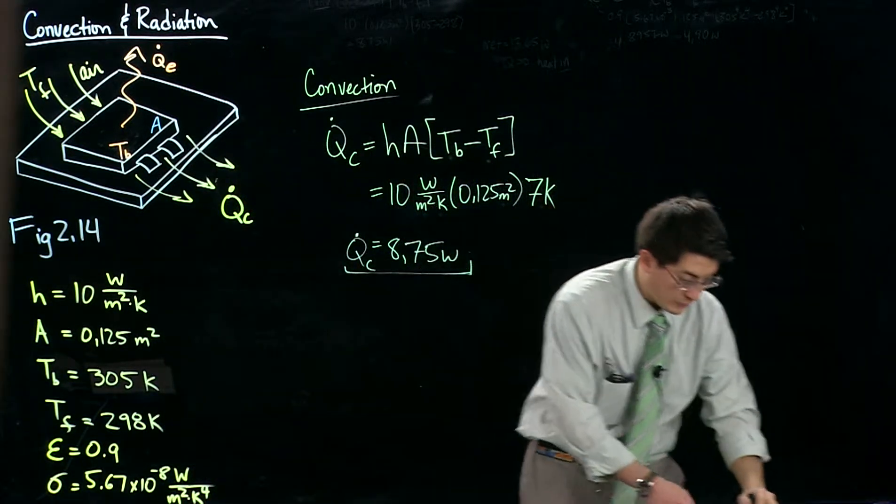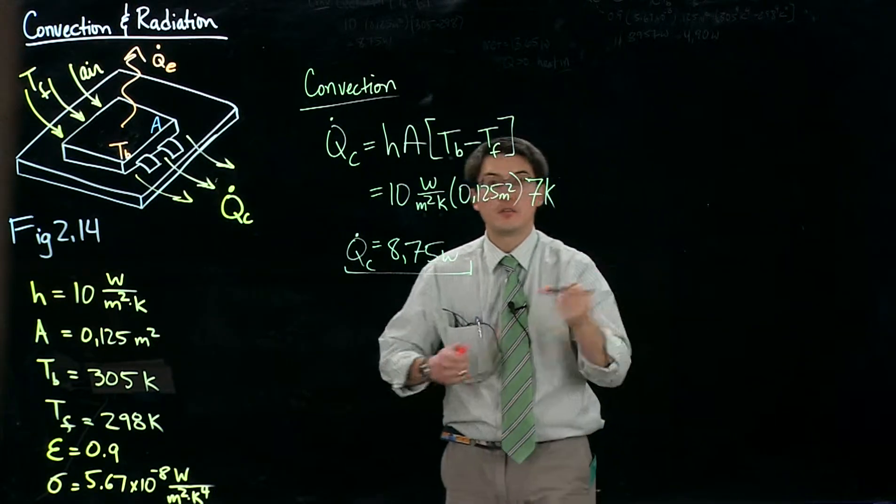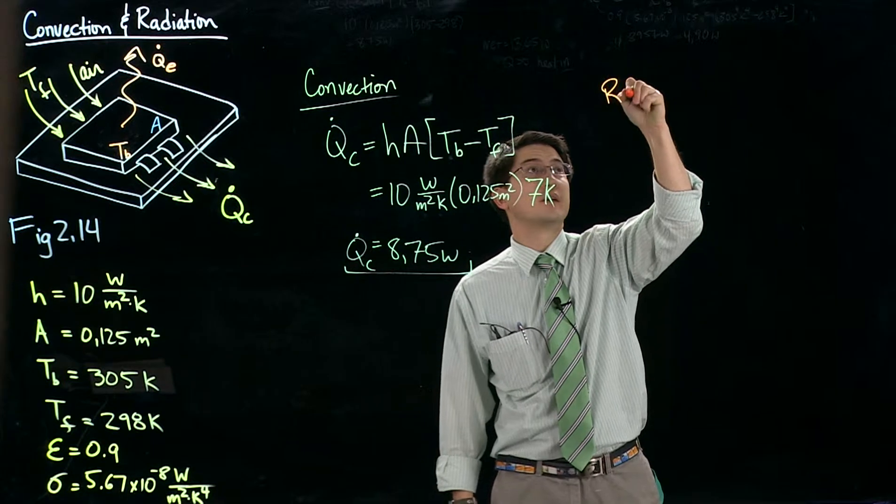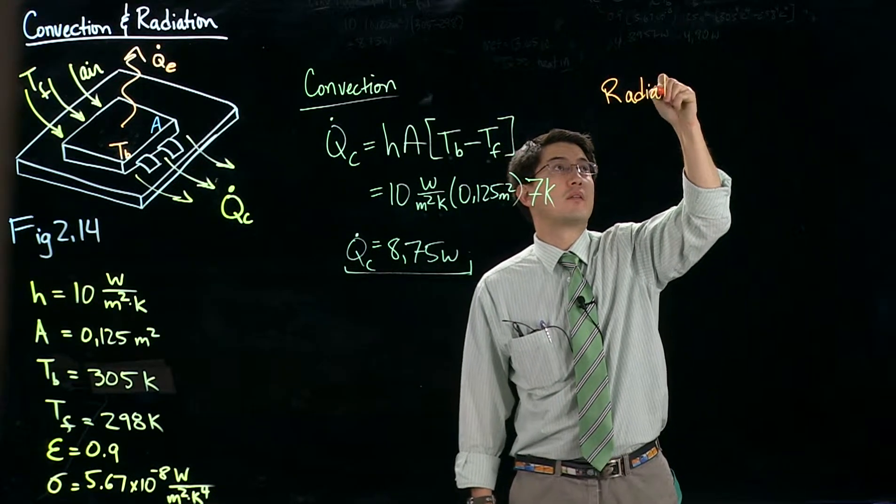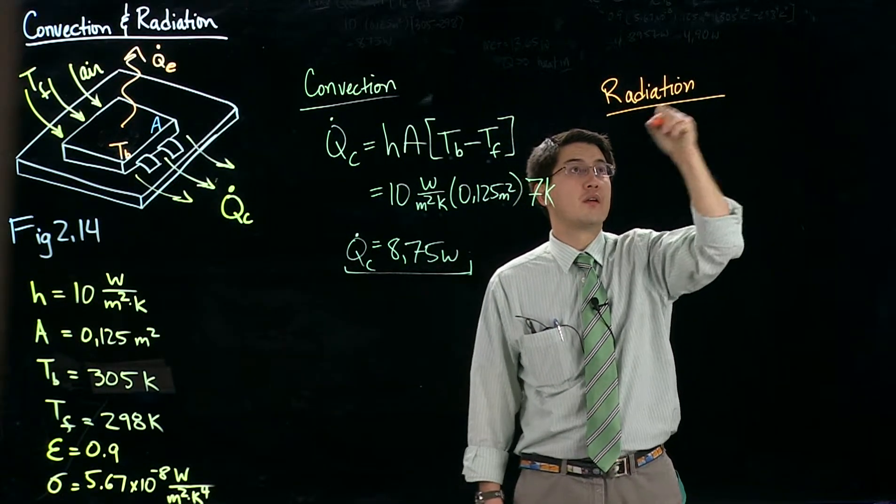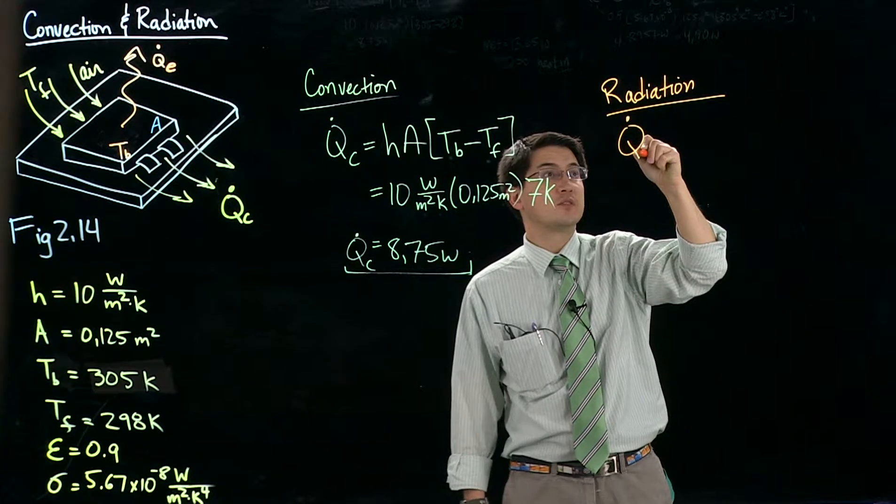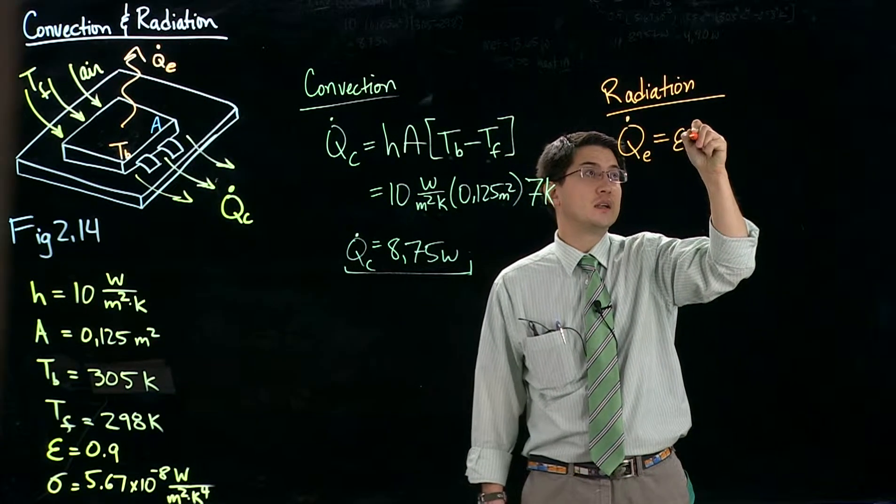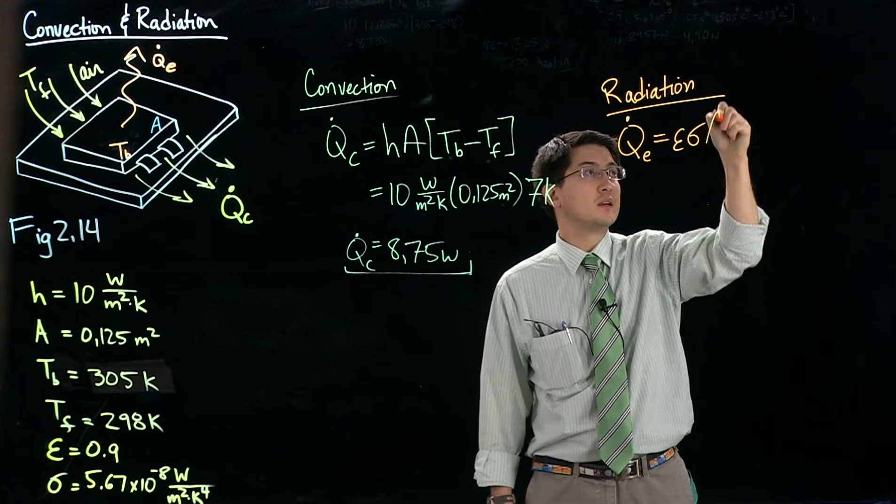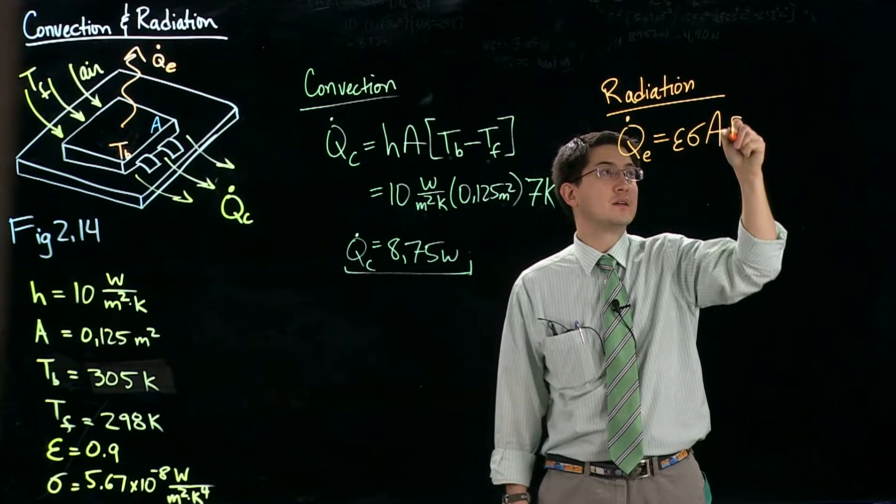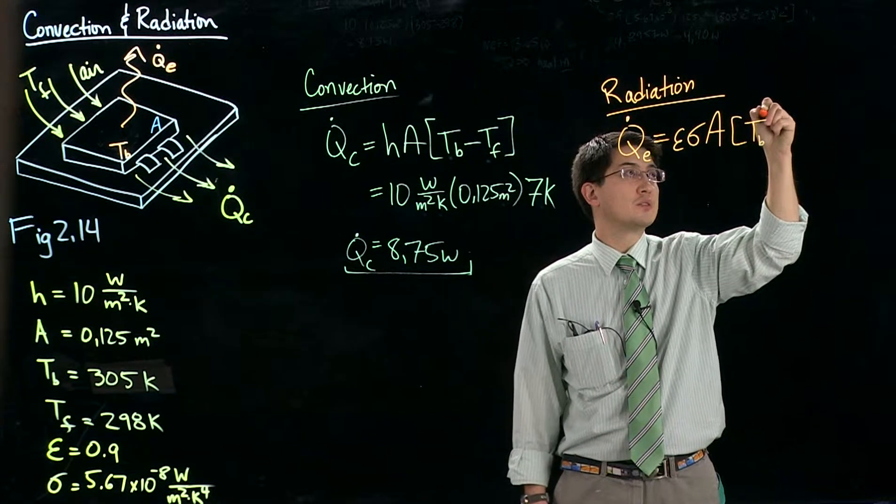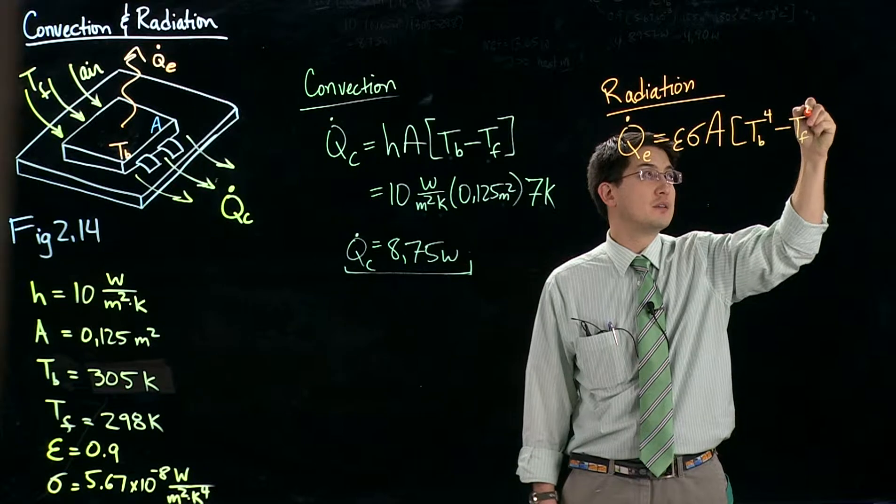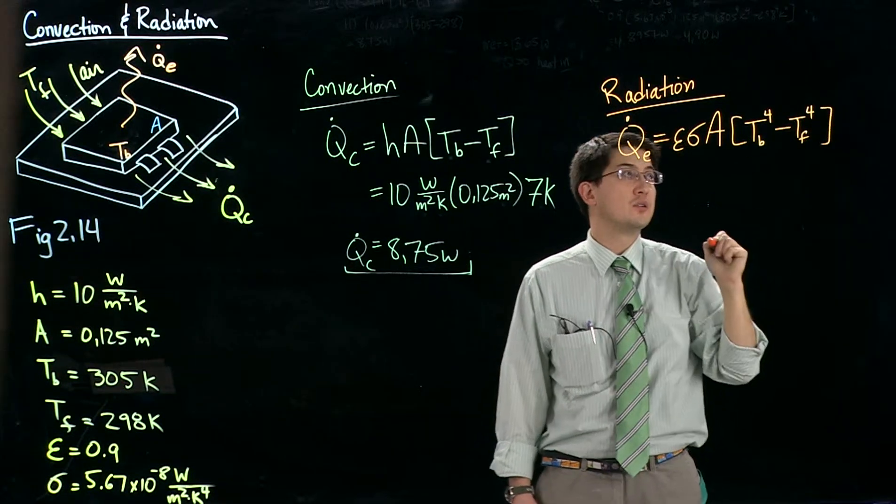So that's the first step. For the second step, let's find the radiation. The heat transfer rate for radiation is going to be the emissivity times the Stefan-Boltzmann constant times the area times the temperature of the source to the fourth minus the temperature of the surrounding material to the fourth.